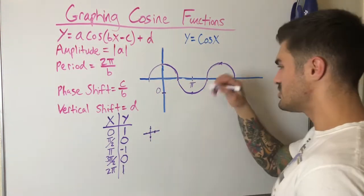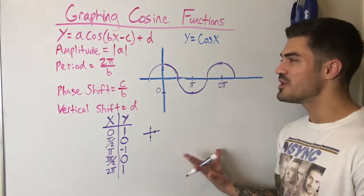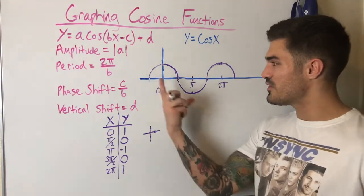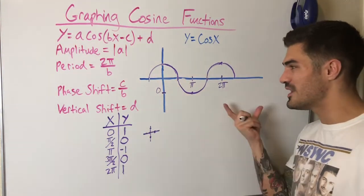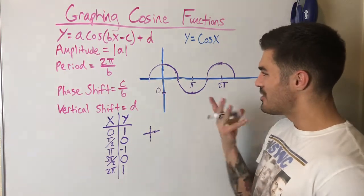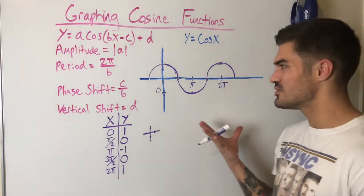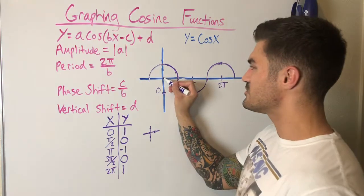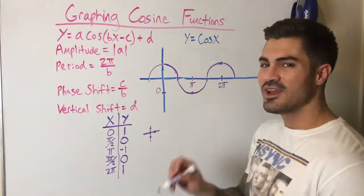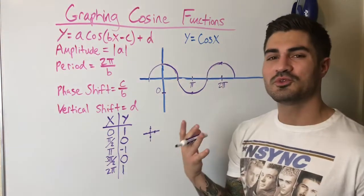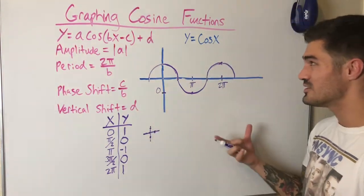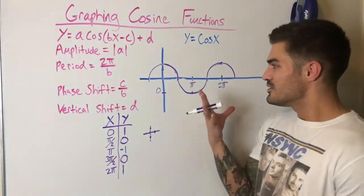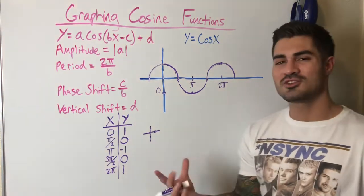Let's notice the difference between cosine and sine. If I shifted this cosine graph to the right by π/2 units, this point moves to the origin and now I'm starting at (0, 0), going up, then back down — and that's actually the same as y equals sine x. So by applying a basic phase shift to the cosine parent function, it becomes the parent function for sine, which is pretty cool.